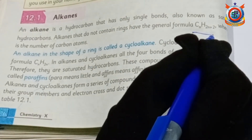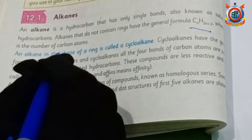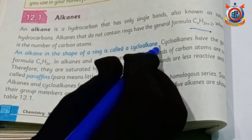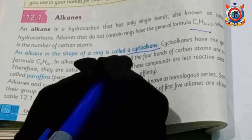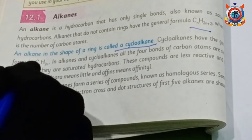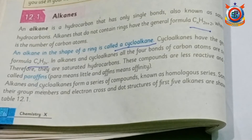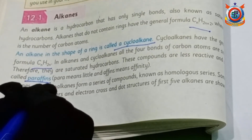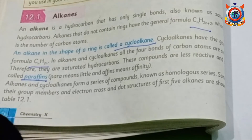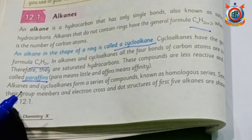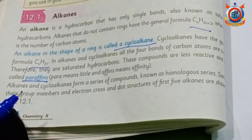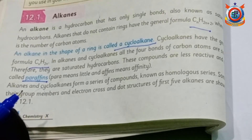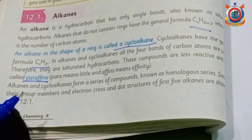Alkane has the general formula CnH2n+2. Alkane is also called cycloalkane, and another name is paraffin. Its reactivity is very low because carbon is covalently bonded with other atoms, making it stable.